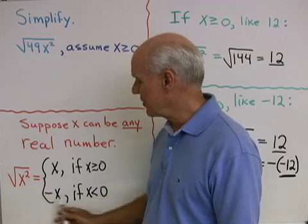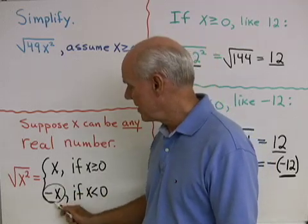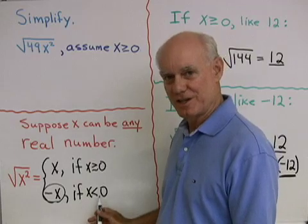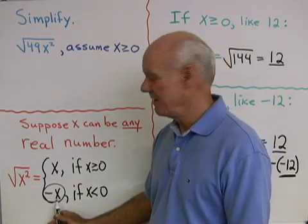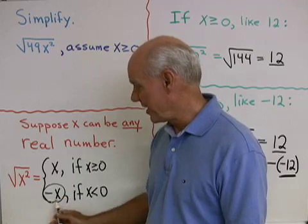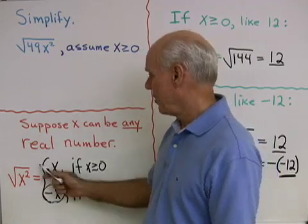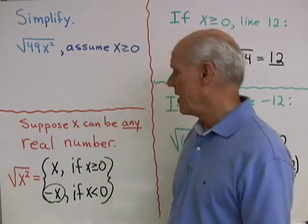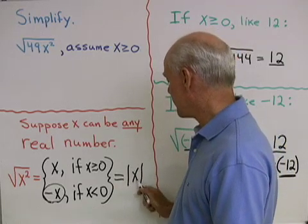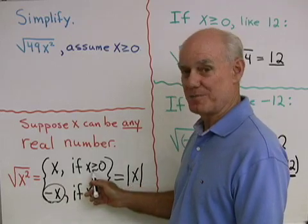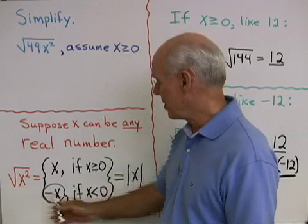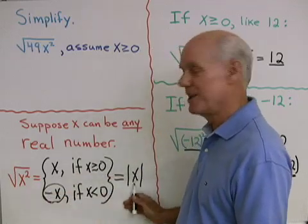Here's the thing you have to understand. The way this definition is written, the expression −x is definitely a positive number — the opposite of x is positive because x itself is negative, and the opposite of a negative number is always positive. Now, what other function does exactly the same thing? The answer is the absolute value function. The absolute value of x is x itself when x is positive or 0, and the absolute value of x is negative x when x is less than 0. So the square root of x² can be written as the absolute value of x.